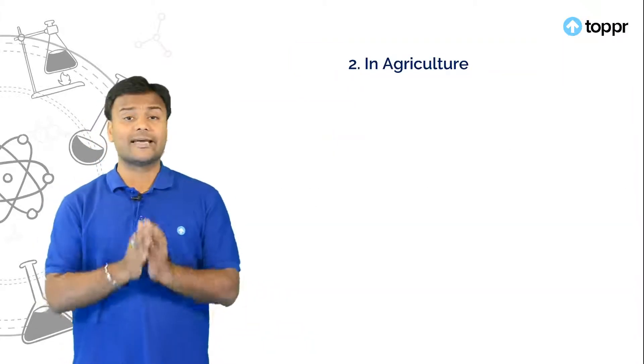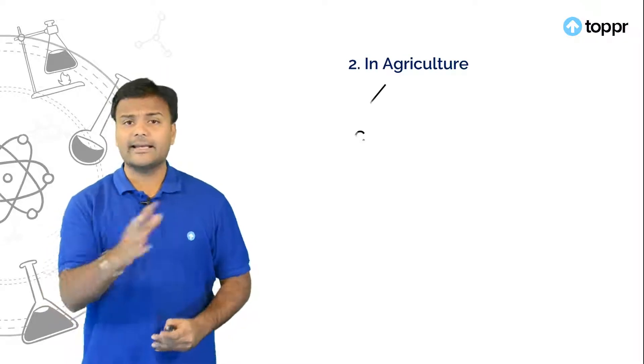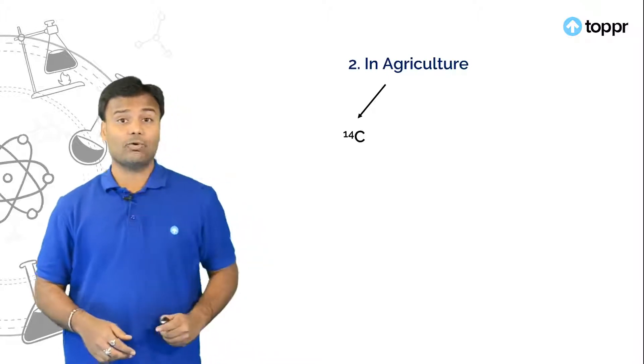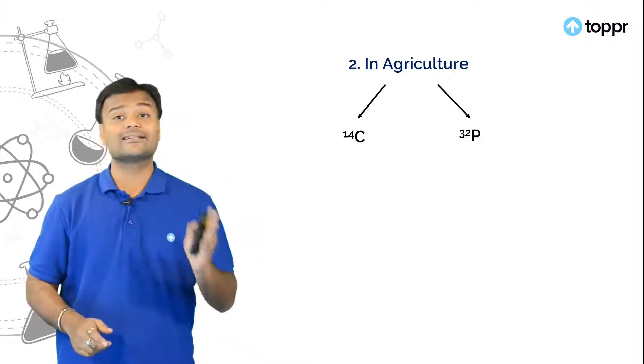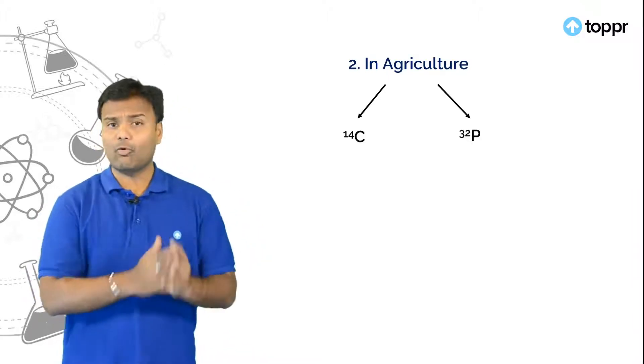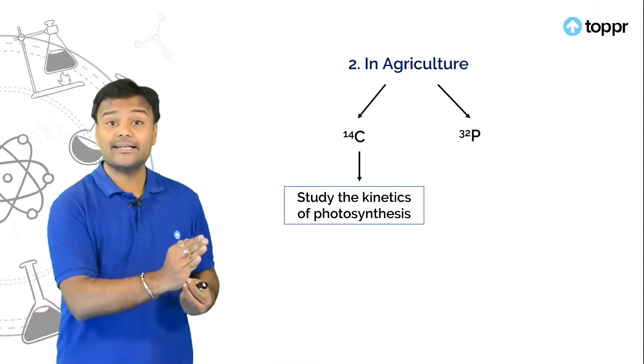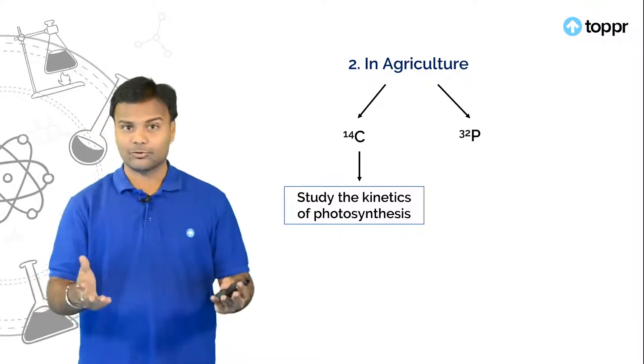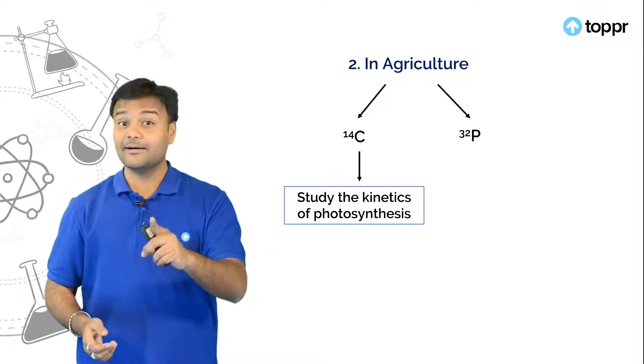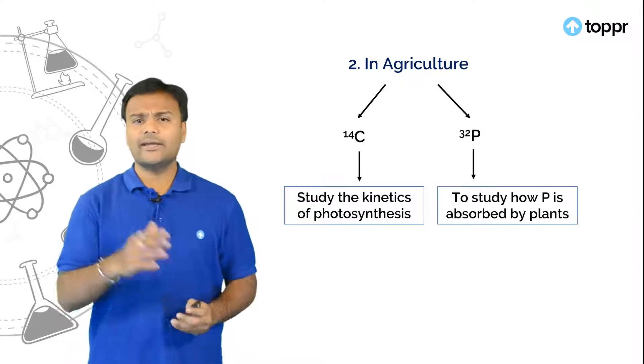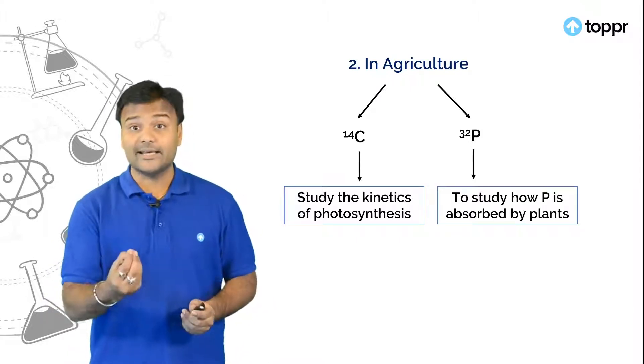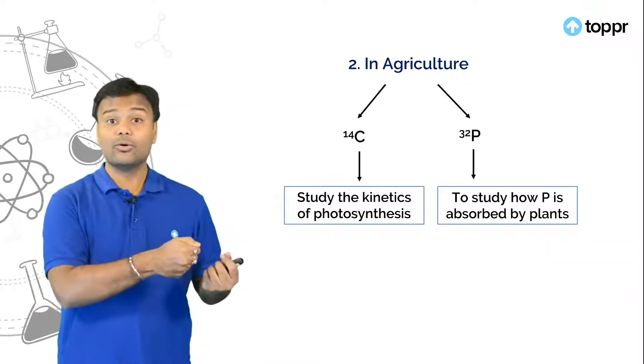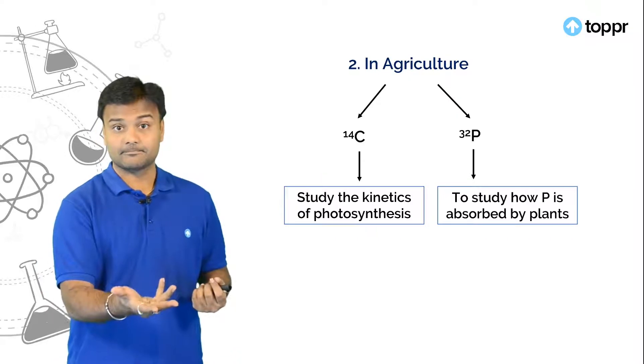Now let us see our next use in agriculture. In agriculture you can use two types of isotopes. One is carbon 14 other is phosphorus 32. Carbon 14 is mainly useful to study the kinetics of photosynthesis reaction. Whereas phosphorus as you know phosphorus is mainly useful in the fertilizers. So here we can study the amount of phosphorus that is absorbed by plants when you spray as a fertilizer.